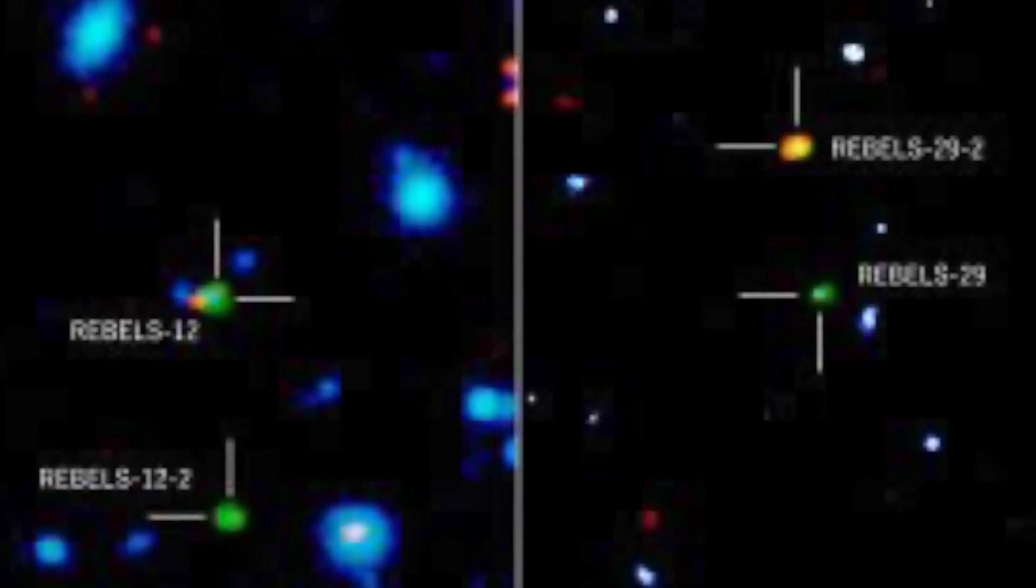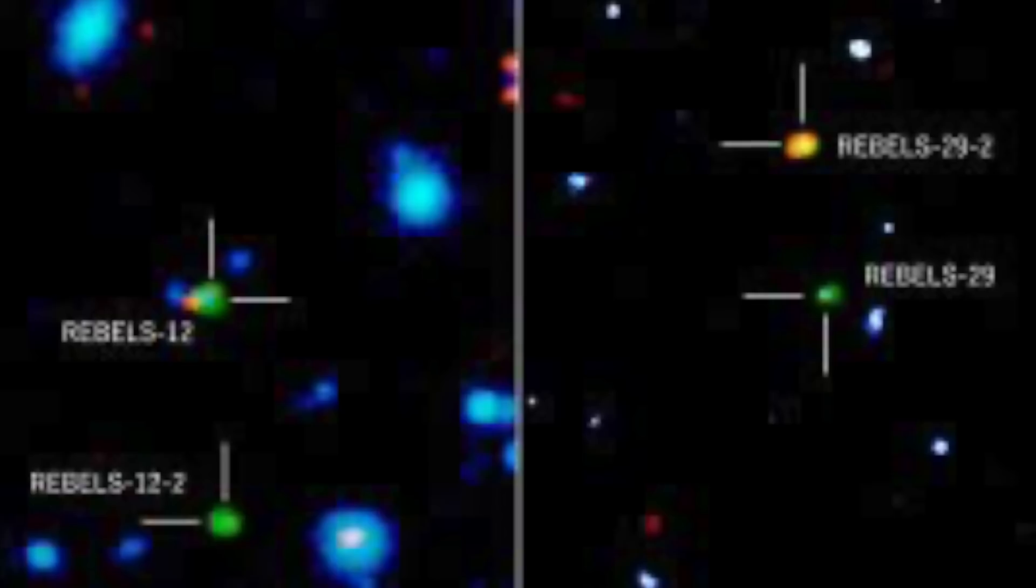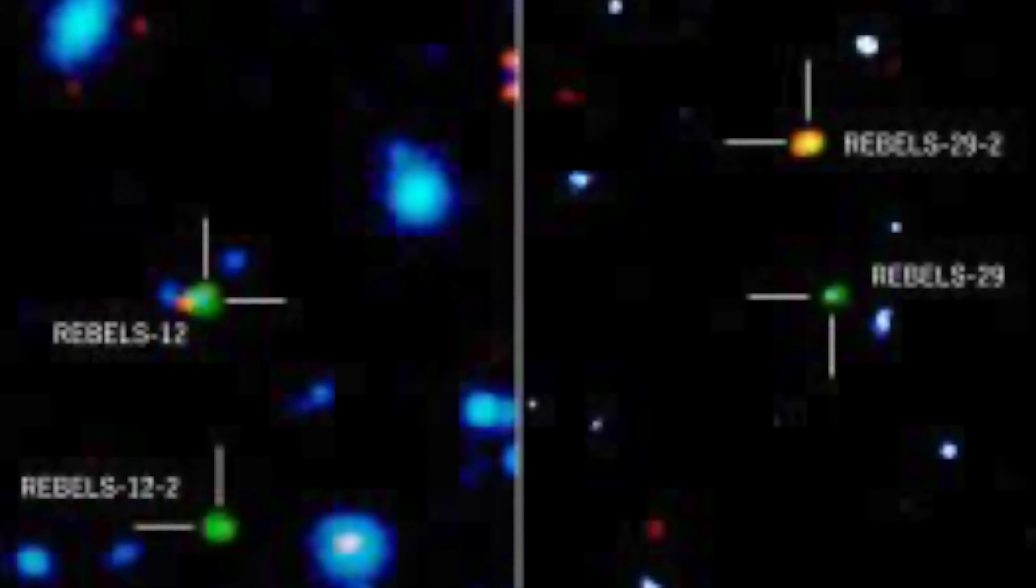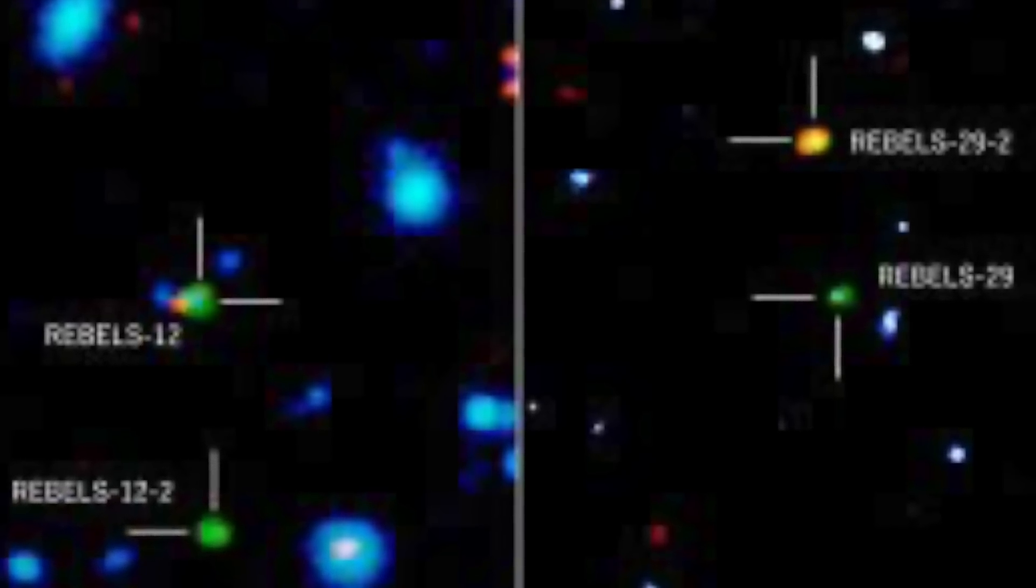It was by sheer luck that some out-of-focus patterns of extra light emissions were spotted while Fudamoto and his team, who have studied 40 other galaxies, were focused on two galaxies, REBELS-12 and REBELS-29. The extra light was coming from a location several thousand light years further than the brighter galaxies the team had their attention on.